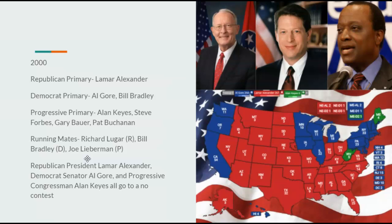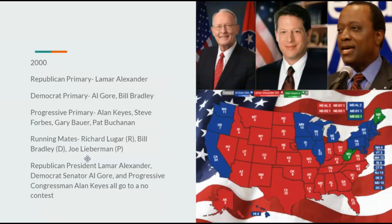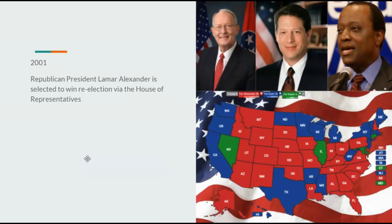In 2000, Republicans nominate President Lamar Alexander, Democrats Al Gore, and Progressives Alan Keyes — who runs a terrible campaign. They all go to no contest, with those six electoral votes being crucial, but Keyes takes them. Lamar Alexander is again selected by the House, though he does win the popular vote this time. Lamar Alexander finally signs off on a proportional electoral college system, and the far right breaks from the Progressive Party, forming the Patriot Party — giving the country a four-party system.